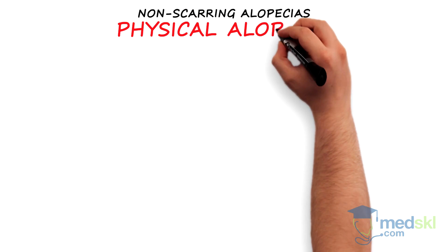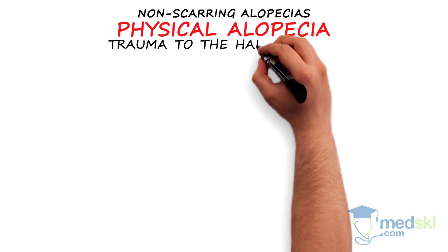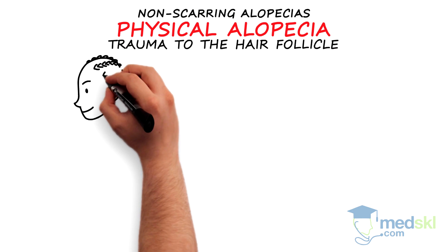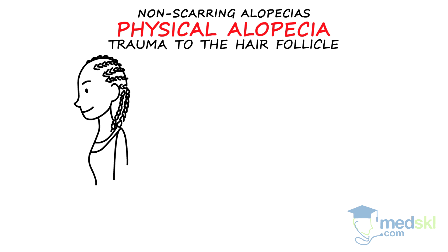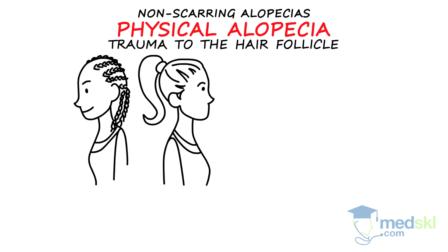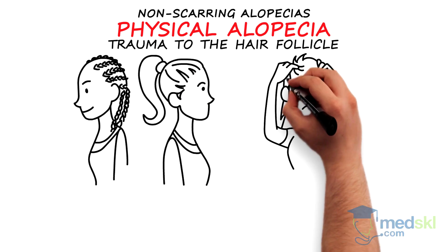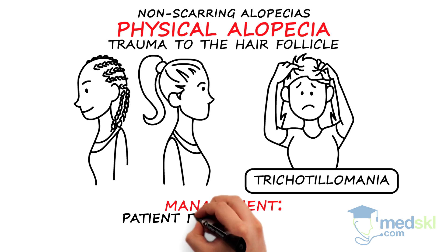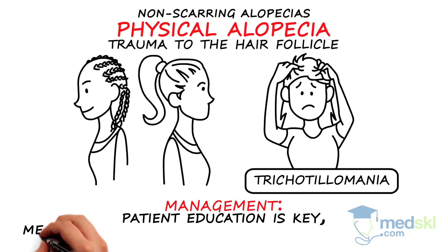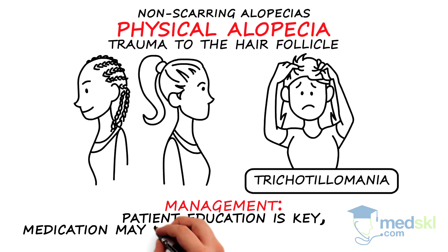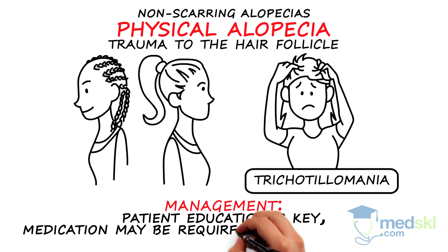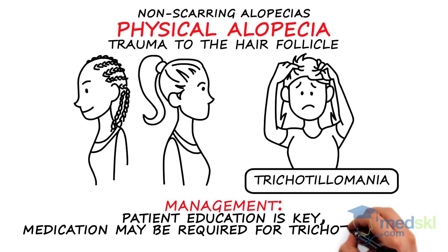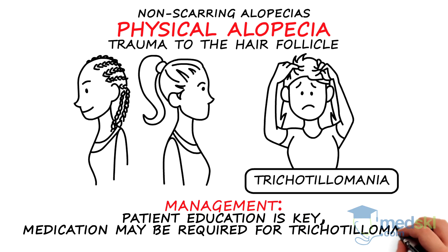Physical alopecias result from trauma to the hair follicle. This may be the consequence of traction from hair styling practices or due to an impulse control disorder called trichotillomania, where individuals have a compulsion to pull out their hair. Patient education is key to management. Pharmacotherapy such as selective serotonin reuptake inhibitors or SSRIs may be required for trichotillomania.